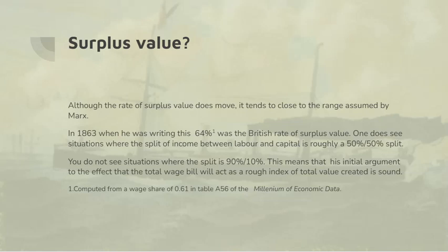Marx assumed a 100% rate of surplus value. Actually, in 1863 when he was writing it, the rate was 64% in Britain. One does actually see situations where the split is 50-50 — that is to say, a 100% rate of surplus value, because he divides the surplus over the variable capital. But what you don't see is situations where the split is 90/10 or 10/90 in the share of income. This means that his initial argument — that the total wage bill will act roughly as an index for the number of workers, in order to obtain the ratio of dead to living labour — is basically sound.